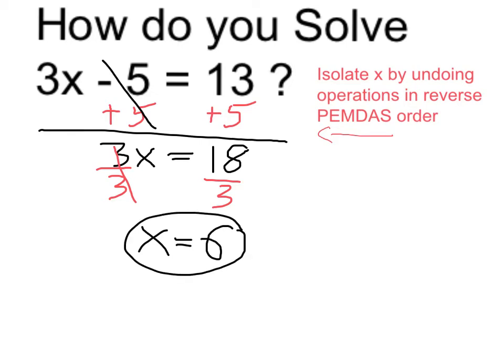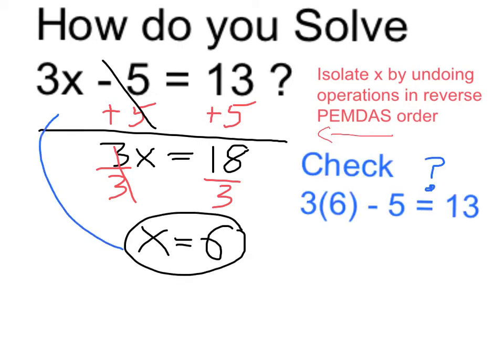Let me just quickly test that. If I plug 6 into my original equation, this should be true. And indeed 3 times 6 is equal to 18. And 18 minus 5 is equal to 13. So it checks out and I am assured that 6 is the correct answer. It's the solution to this equation.